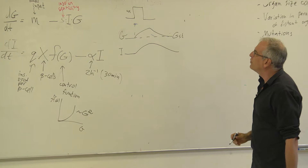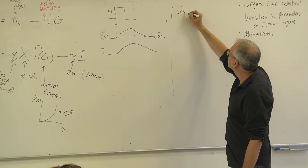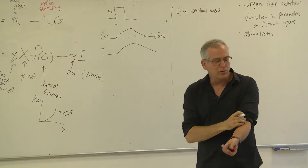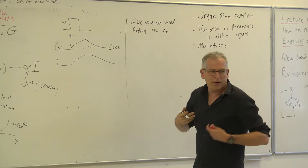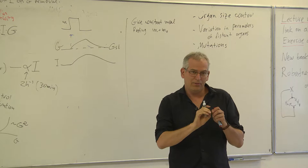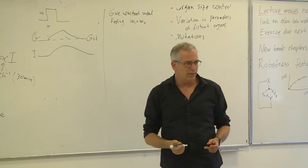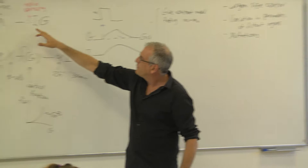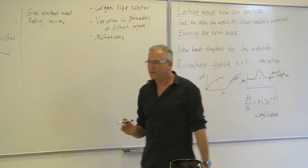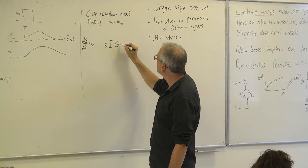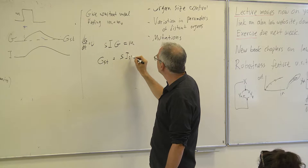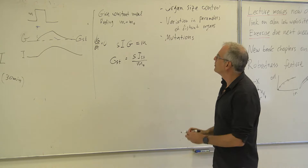It's very interesting to ask what is the glucose steady state. Suppose I give a constant meal, or when fasting, M is just the basal production of glucose by the liver - that's where we are at night or in the morning before eating. We want the steady state to be 5 millimolar. Setting dG/dt = 0 gives S·I·G = M, so G steady state equals M₀ divided by S·I steady state.